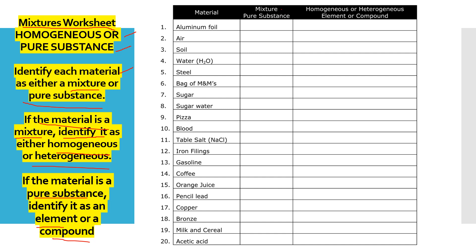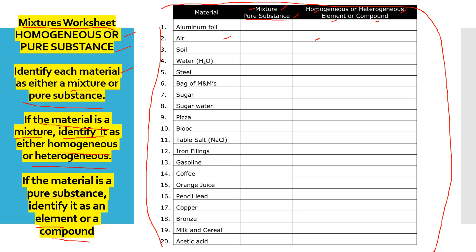Number 1: Choose whether aluminum foil is a pure mixture or pure substance. Then identify it — is aluminum foil homogeneous, heterogeneous, an element, or a compound? Choose from the options. This is how it should look in your Google Documents and also in your notebook. You need to copy it and then answer it properly.